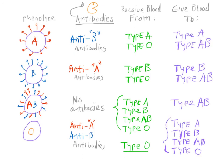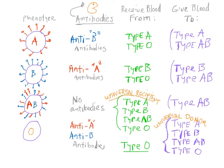Type O people have both kinds of antibodies in their bloodstream, so they can only receive their own type, type O. Looking at who can donate: type A blood can be given to type A or type AB people; type B blood can be given to type B or type AB people; type AB blood can only be given to type AB people. But type O blood can be given to anybody. So type AB is known as the universal recipient, while type O is known as the universal donor.